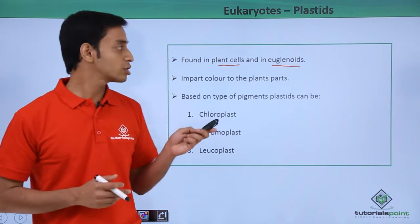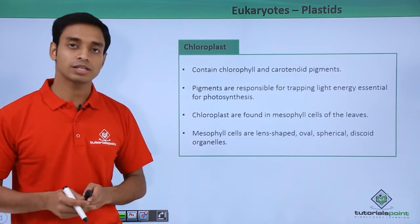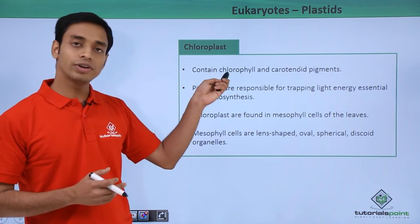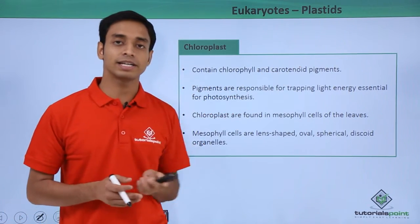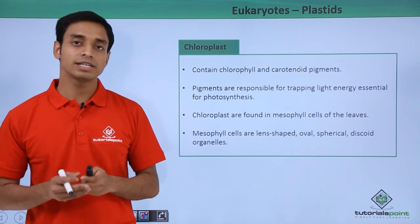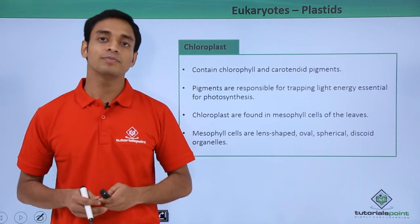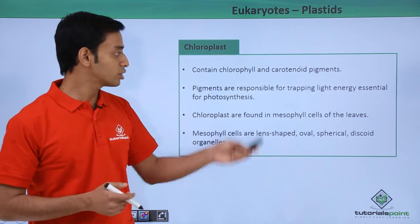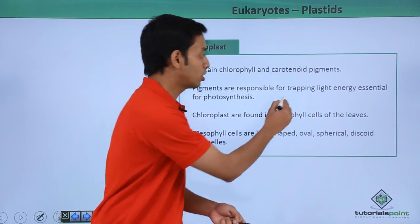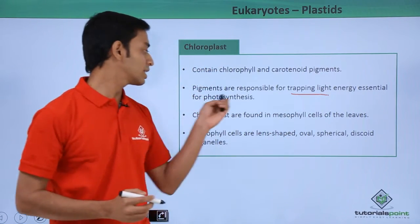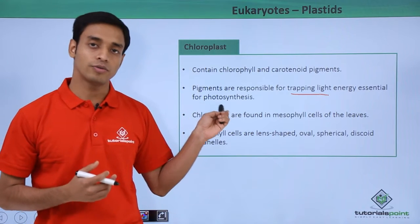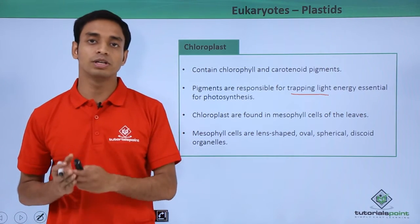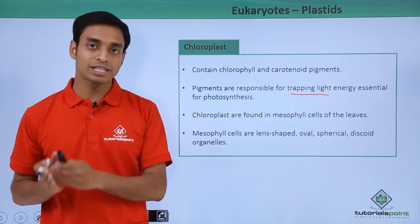First, let us talk about the chloroplast. Chloroplasts are chlorophyll-containing and carotenoid pigment-containing plastids found in plant cells. These pigments are responsible for trapping light energy, which is essential for the process of photosynthesis.